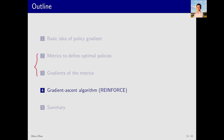In the second and third sections we introduced metrics and their gradients. Now we move to the fourth section where we will incorporate the gradient into the gradient ascent algorithm to find optimal policies.